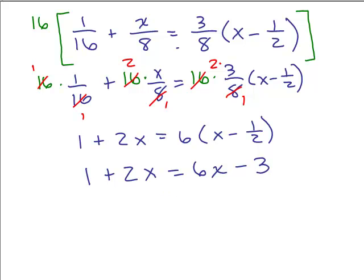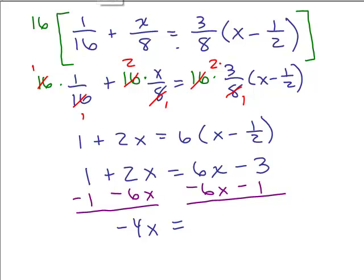And it's exactly the same as before. Subtract 6x, so we have negative 4x on this side. You also want to subtract 1, so the constants are on the other side. Gives you a negative 4. And then divide by negative 4, so x equals 1.